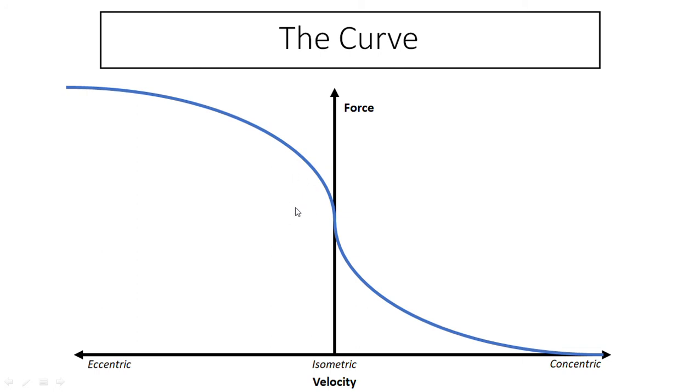If we load just 10% above our one rep max and we then lower it down as slow as we possibly can, we're going to be somewhere around here. The force is going to be extremely high because the load is so heavy. However, the velocity is going to be fairly slow if we go as slow as we can, but it's not going to be so slow that we're not moving it. We're still going to lower ourselves down as slow as possible.